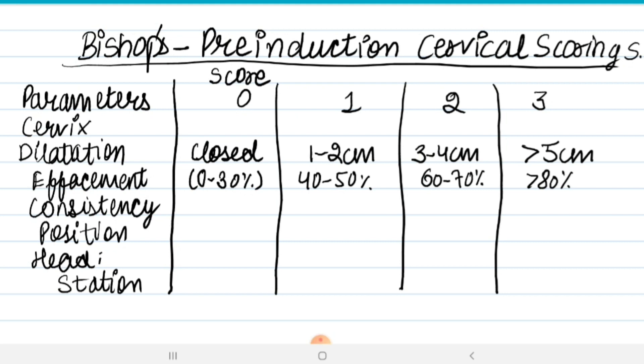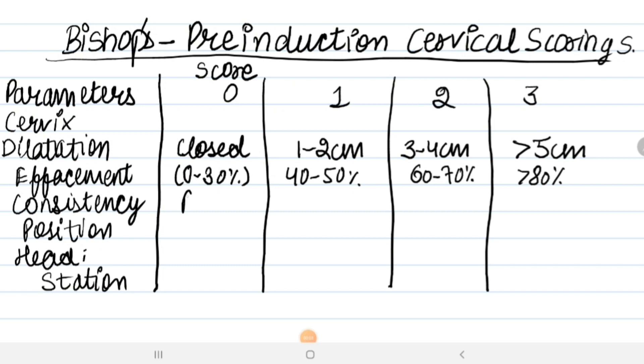Next is consistency. Consistency of the cervix refers to the feel of the cervix, how the cervix is feeling, like if mucus is present or not. On examination, if the consistency is firm, the score is 0. If the consistency is medium, the score is 1. If the consistency is soft, the score is 2. And if it is more than soft, the score is 3.